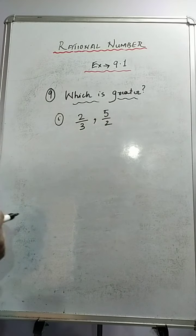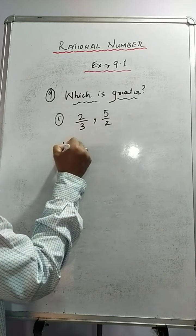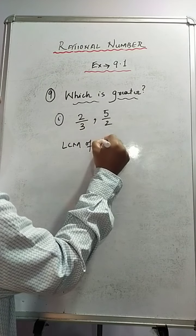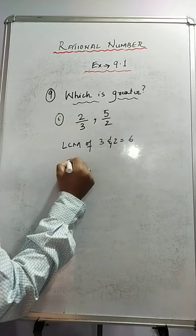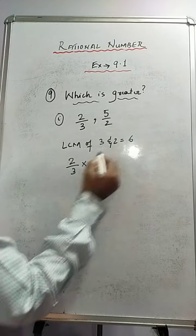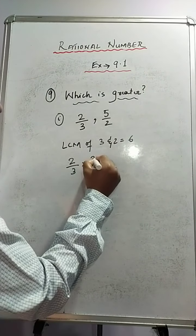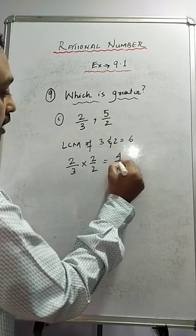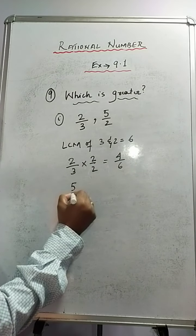To compare these, the first thing you will do is find the LCM of the denominators 3 and 2. The LCM of 3 and 2 is 6. Now write the first rational number and divide the LCM by this denominator — you get 2. Multiply 2 with both the numerator and denominator, and you get 4 upon 6.